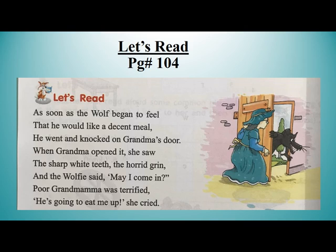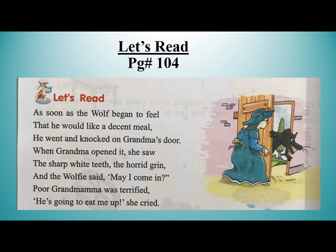Now I am going to explain the first stanza. There was a wolf who began to feel hungry — he wanted to have a good meal. Meal means 'khana.' He went to a little cottage or hut and knocked the door. Grandmama opened the door and was shocked to see a horrible wolf in front of her. The wolf had sharp white teeth with a horrid grin. The poor grandma was terrified — because wolfie asked to come in. Grandmother cried and said, 'He is going to eat me up! Help! Please help!'